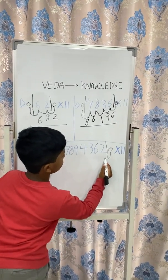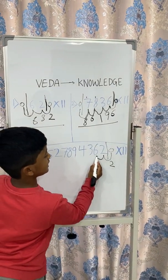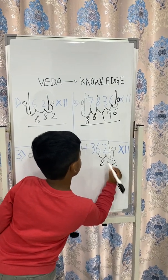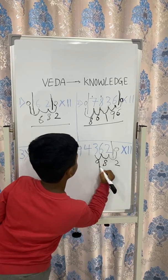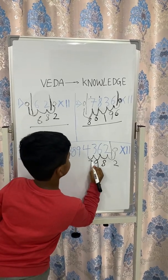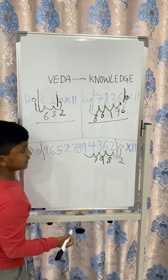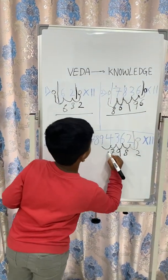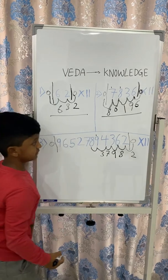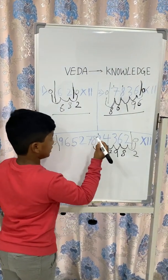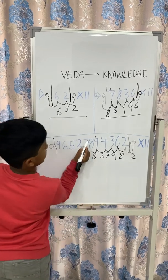Then you will add 0 plus 2 which gives you 2. You add 2 plus 6 which gives you 8. Then you add 6 plus 3 which gives you 9. Then you add 3 plus 4 which gives you 7. Then you add 4 plus 9 which gives you 13. Here, we write only 3 and carry the 1. Then we add 9 plus 8 which gives you 17, plus the carried 1 makes it 18. We write 8 and carry the 1.